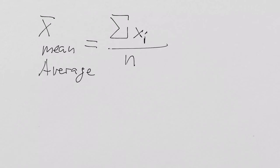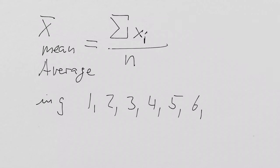So let's say I weigh my chocolates and I find the following, in grams: 1, 2, 3, 4, 5, 6, 7. Can you please calculate the mean? What's the mean? Four. So the mean is four.